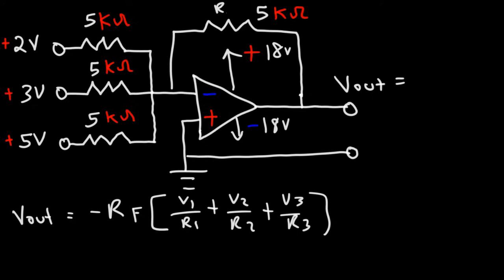The feedback resistor, Rf, is 5 kilo ohms. R1, R2, and R3 is the same. So because all of the resistors equal each other, we could cancel all of them in this equation. So Rf will cancel with R1, R2, and R3.